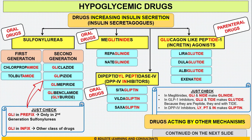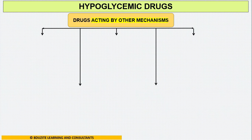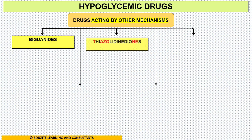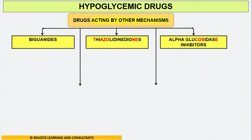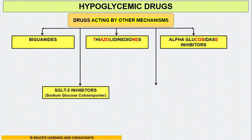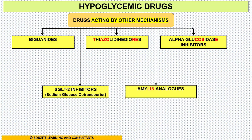Now, coming to the drugs acting by other mechanisms. Here we have five categories: biguanides, thiazolidinediones, alpha-glucosidase inhibitors, SGLT2 inhibitors, and amylin analog.